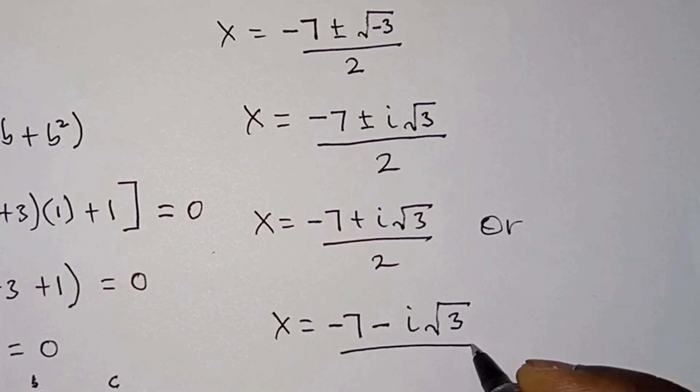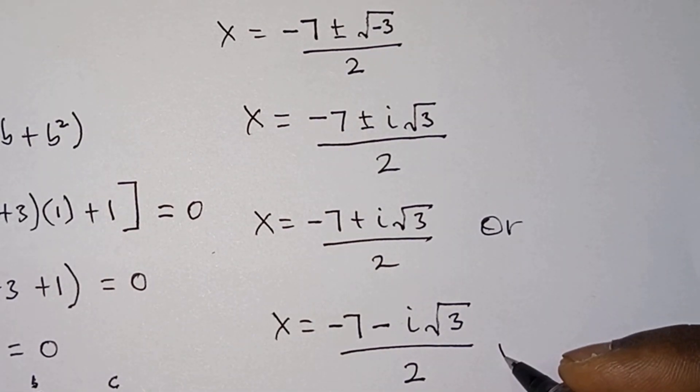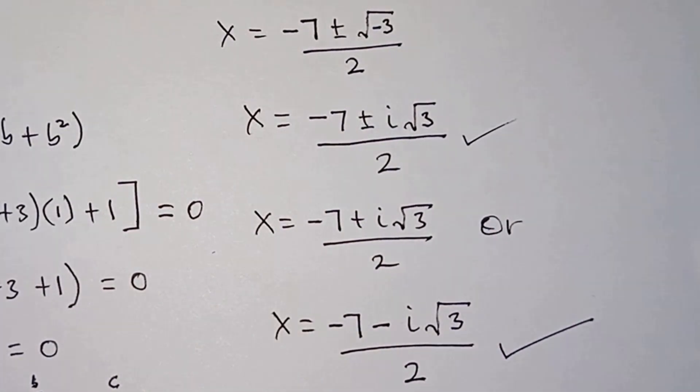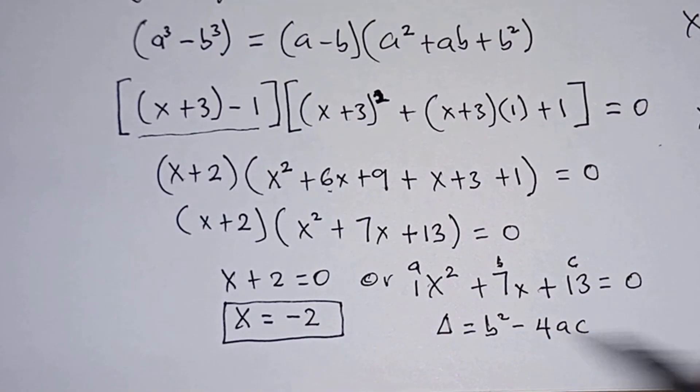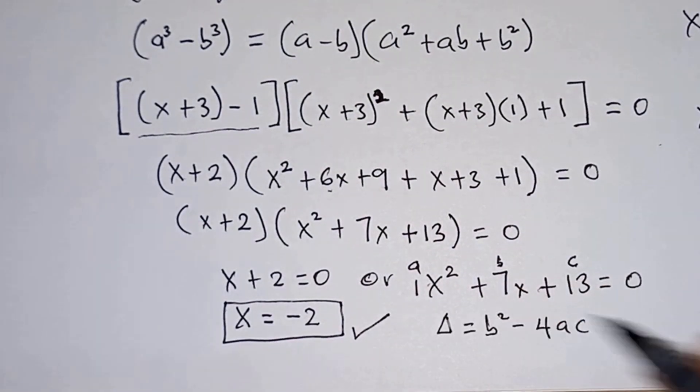So we see that there are two complex solutions and one real solution, which is x equals negative 2.